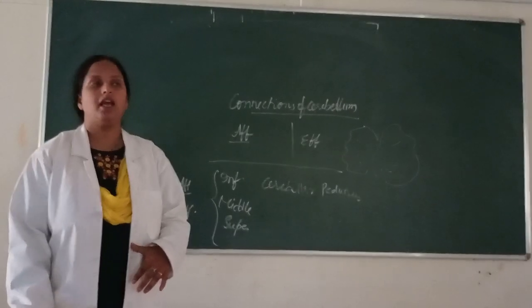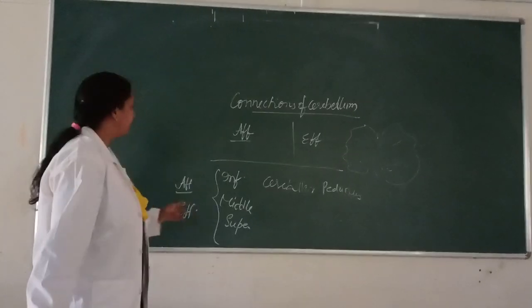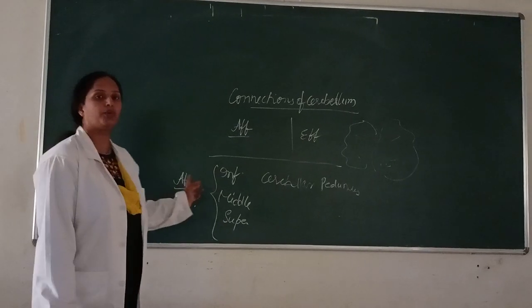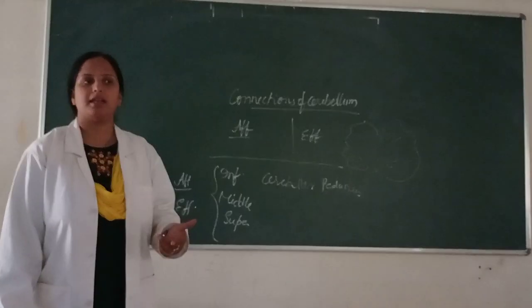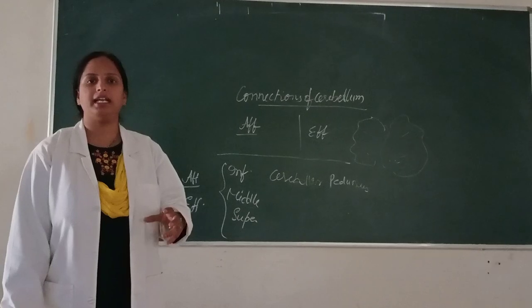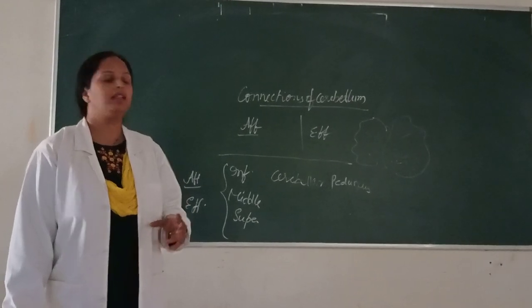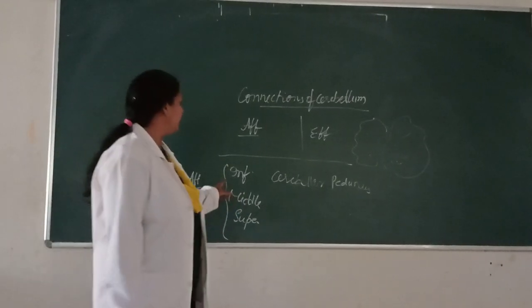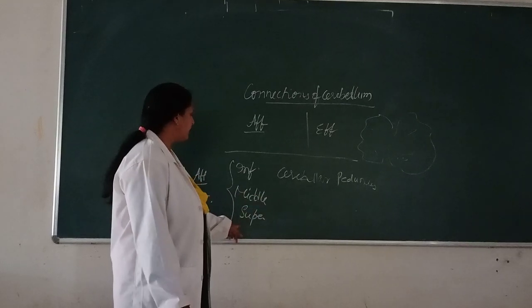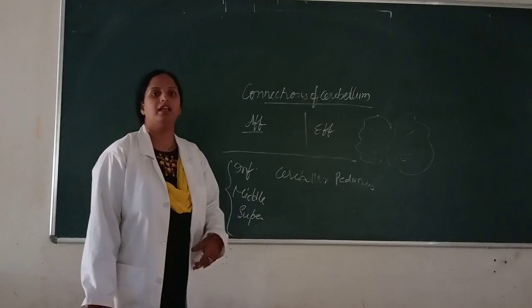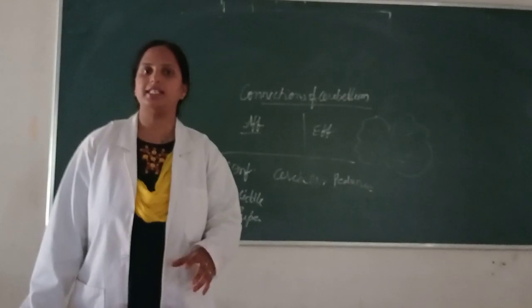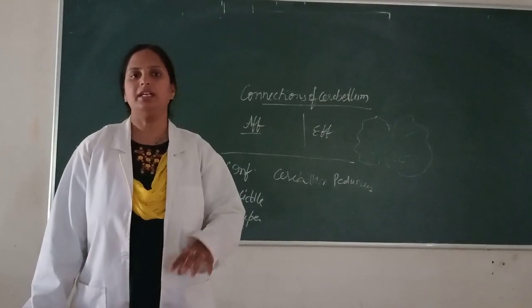The afferents and efferents going towards and moving away from the cerebellum form three types of cerebellar peduncles: the inferior cerebellar peduncle, the middle cerebellar peduncle, and the superior cerebellar peduncle. In each of these peduncles, we have both afferents and efferents.